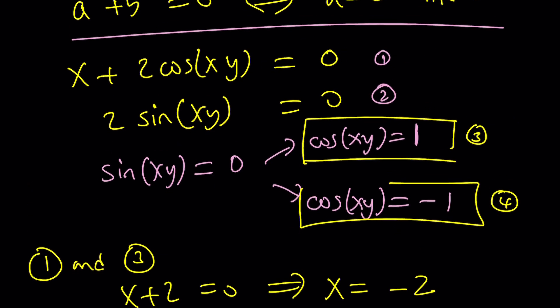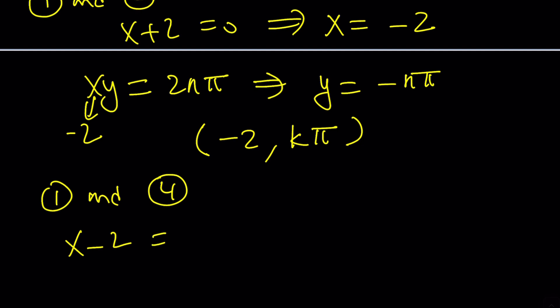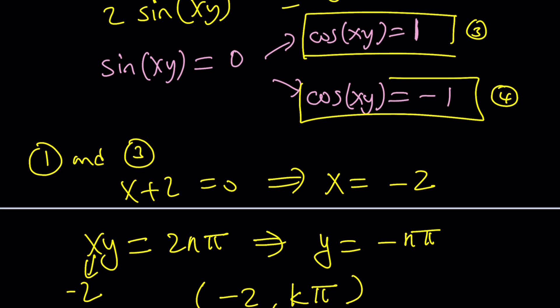If you plug it into the first equation, you're going to get x minus 2 equals 0, which means x is 2. Beautiful. And then from here, you're going to plug it into, but of course, here xy is negative 1.